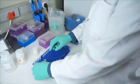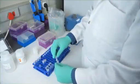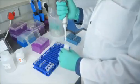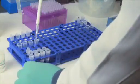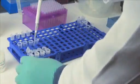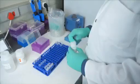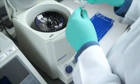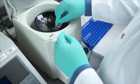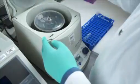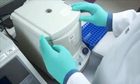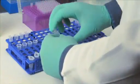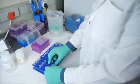Place the spin column in a clean 1.7 milliliter elution tube. Add 40 microliters of elution buffer to the center of the column and incubate the column at room temperature for 1 minute. Centrifuge the column at maximum speed for 2 to 3 minutes. The elution tube contains your purified PCR product ready for sequencing. Discard the column.